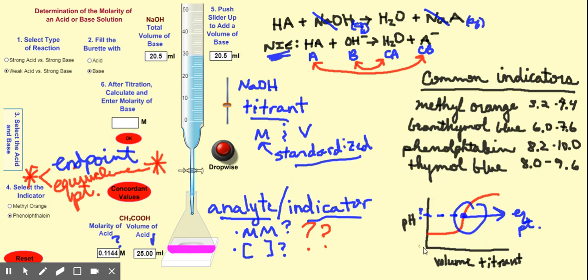For this particular lab, the pH at the equivalence point would be greater than 7. So I wouldn't choose methyl orange — it changes color around pH 3.2 to 4 — and that's not where my equivalence point is. Bromothymol blue changes color between pH 6 and 7.6, which is also not right. For a weak acid analyte with a strong base titrant, I would choose phenolphthalein, which is the most common indicator used in this case.